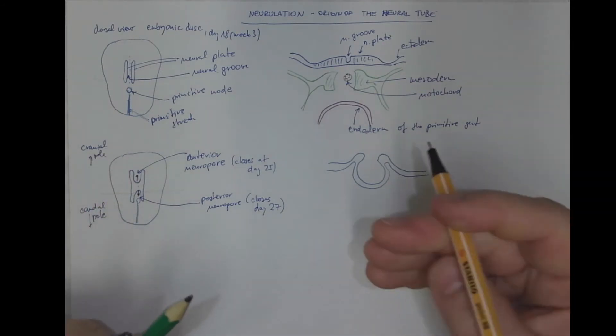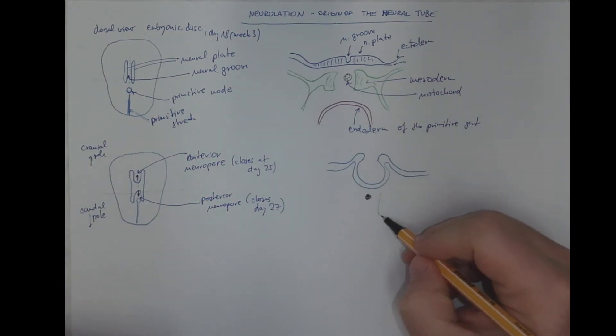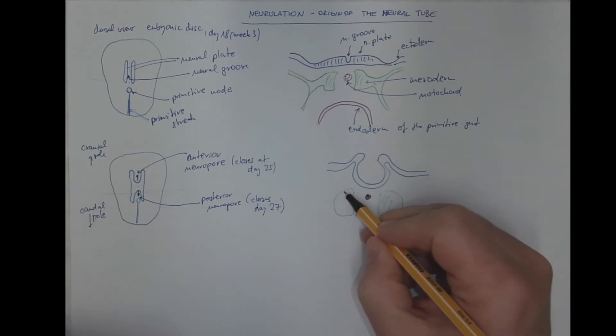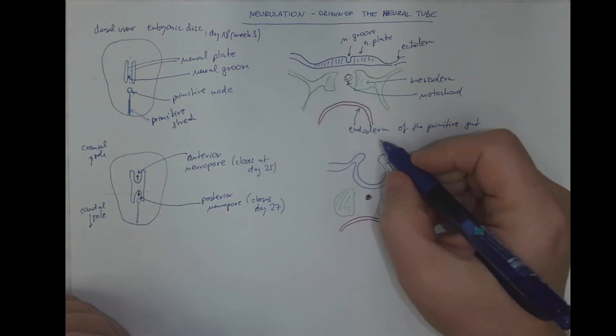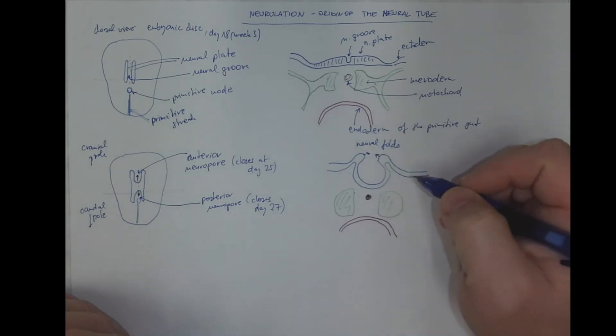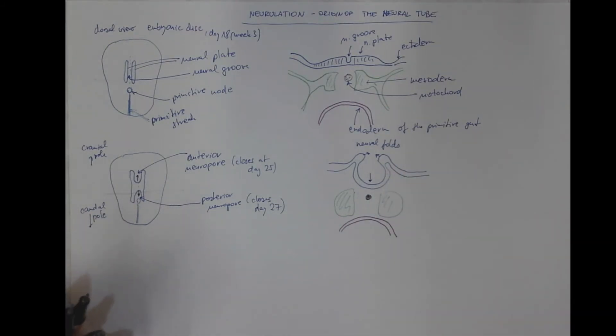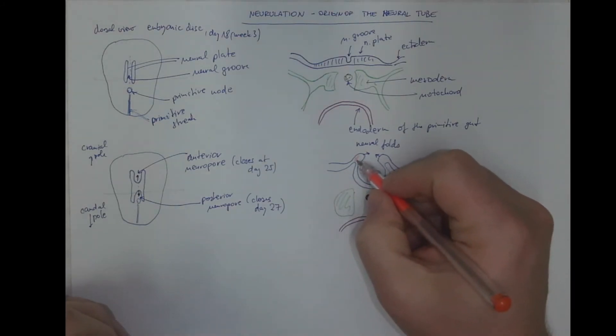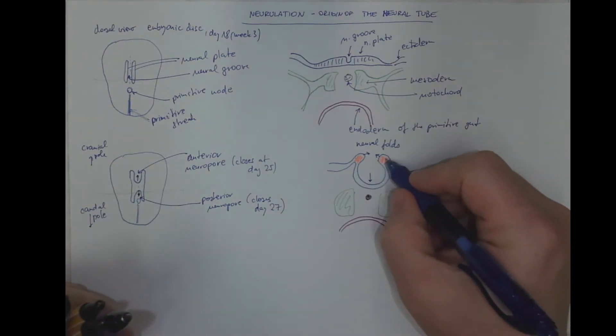Here we got the notochord, the mesoderm and the endoderm. These are neural folds that are approaching each other. The tube is being invaginated. And in this region is the prospective region where material of future structures called neural crests can be found. So this is the prospective neural crest.